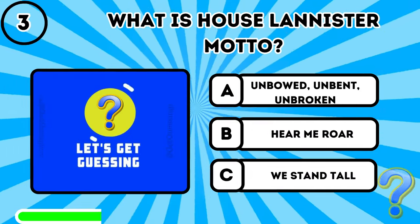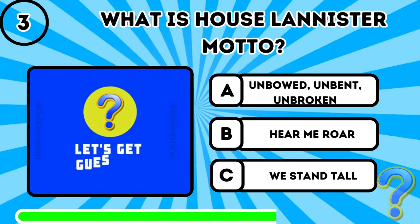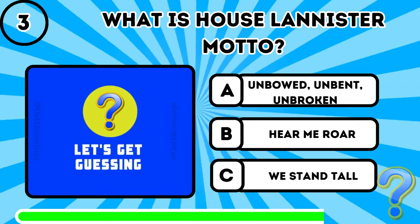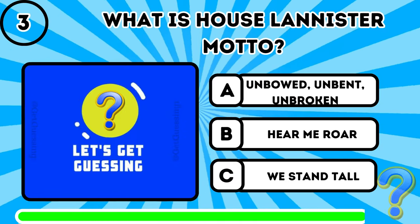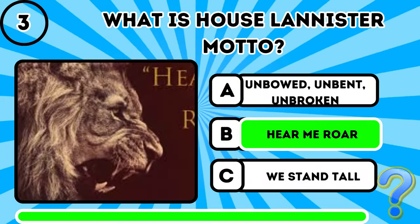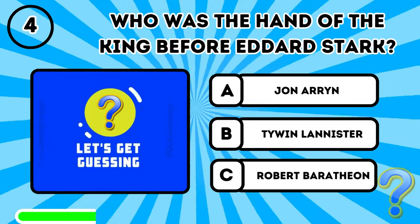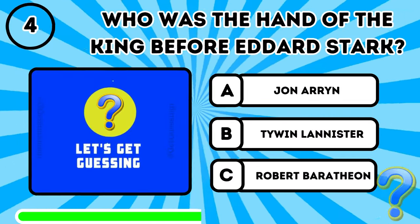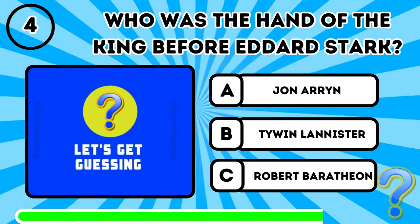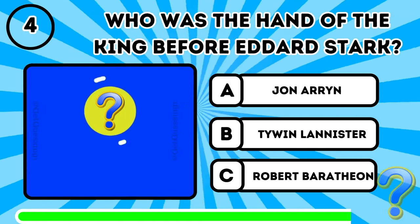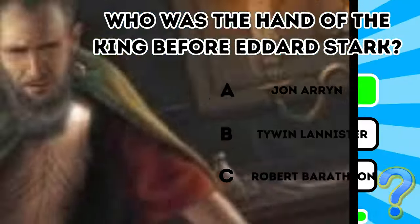Question 3: What is House Lannister's motto? The official answer is Hear Me Roar. Question 4: Who was the Hand of the King before Eddard Stark? It was Jon Arryn.